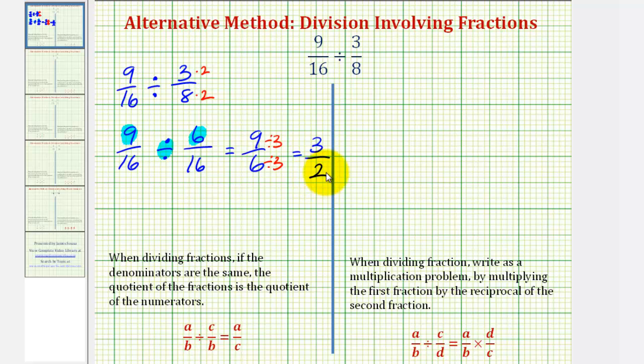So this simplifies to 3/2, which is a simplified fraction, but it is also improper. So we could also write this as 1 and 1/2, which means there is 1 and 1/2 of 6/16 in 9/16, or 1 and 1/2 of 3/8 in 9/16.